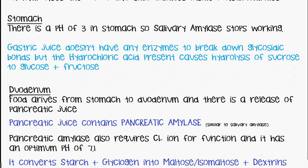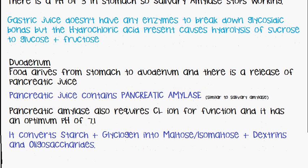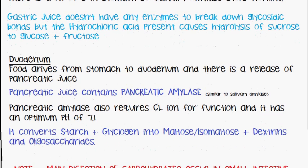When food passes from the stomach to the duodenum of the small intestine, there's a release of pancreatic juice, which contains pancreatic amylase. It has a similar structure to salivary amylase and also requires a chloride ion for its function, but has an optimum pH of 7.1. Pancreatic amylase and salivary amylase are isoenzymes, differing only in their functional pH. It converts starch and glycogen into maltose, isomaltose, dextrins and oligosaccharides.